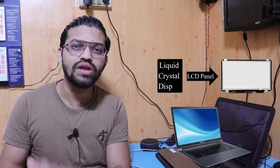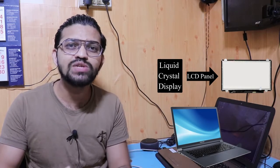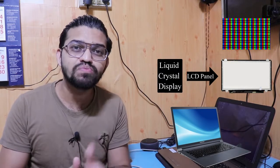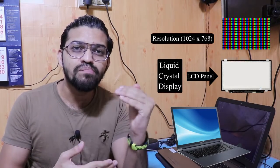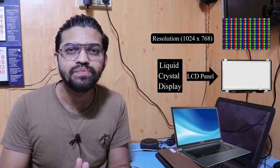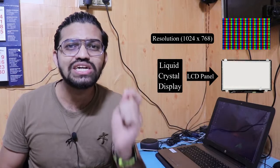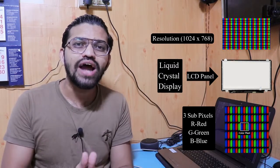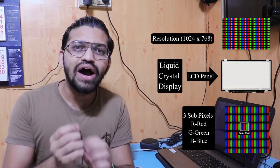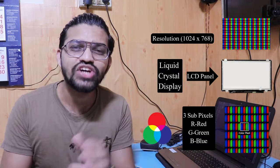The screen of your laptop uses an LCD display. LCD stands for Liquid Crystal Display. This LCD display is essentially an array of small pixels. When you look at the specifications of an LCD panel, the resolution refers to the number of pixels arranged horizontally and vertically. Each pixel is the smallest dot on the screen, and each pixel has three sub-layers: RGB — red, green, and blue.